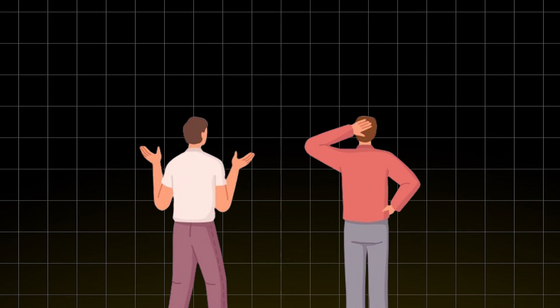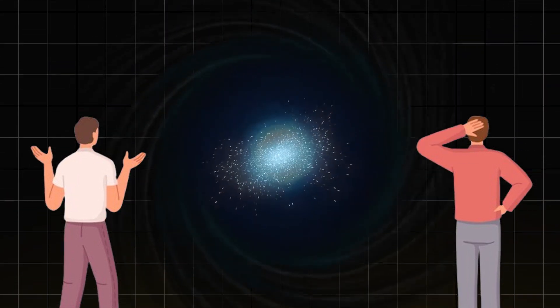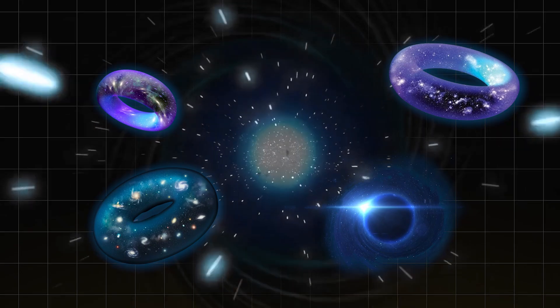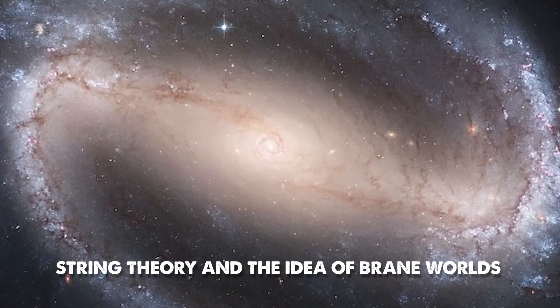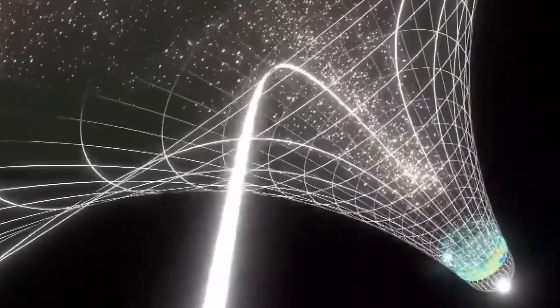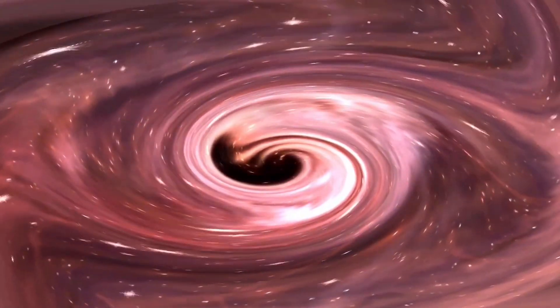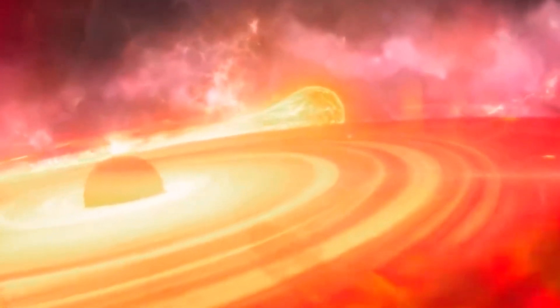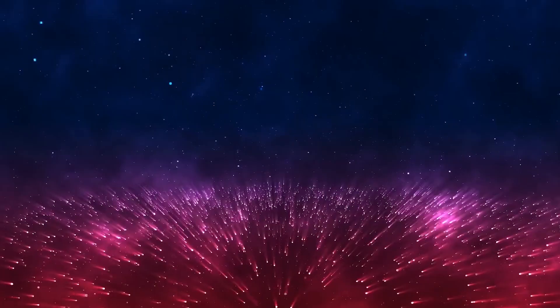In the same way, some people think that our universe might be inside the event horizon of a very large black hole in a place with more dimensions. This idea connects to string theory and the idea of brane worlds, which say that our universe is like a membrane floating in a place with more dimensions, maybe inside a black hole. This is a very different way to look at the universe's very precise physical rules. They could be the result of the black hole's properties when our universe was formed.